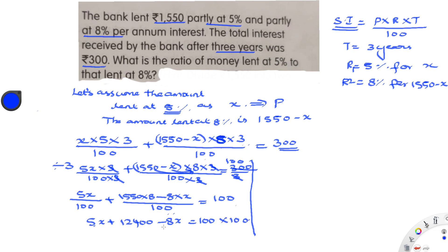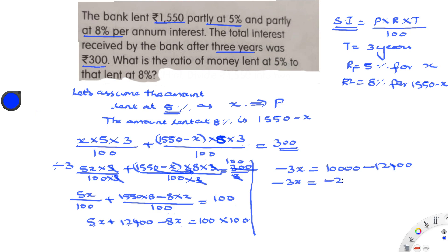Simplifying: 5x − 8x = −3x, so −3x = 10000 − 12400 = −2400. Since minus is on both sides, we get 3x = 2400. Therefore x = 2400 / 3, which gives x = 800.